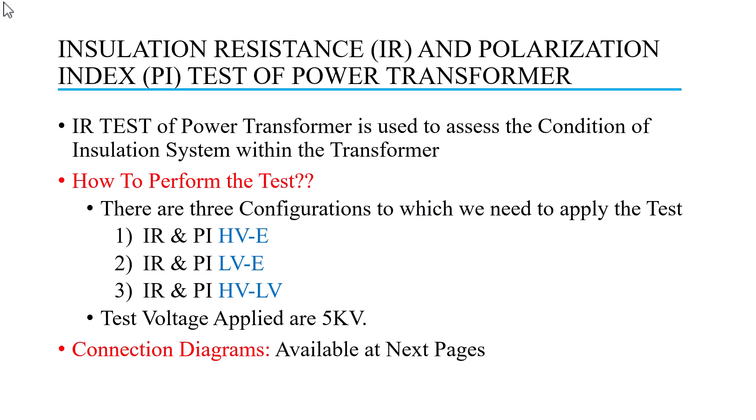The insulation resistance test of a power transformer is used to assess the condition of the insulation system within the transformer. As you know, in the transformer we have windings and a core. The windings are separated from each other, from the core, and from ground. So windings have insulation properties, and to judge these insulation properties we need to do the IR test.